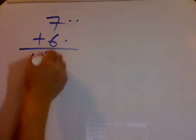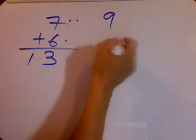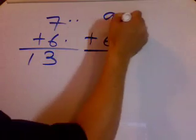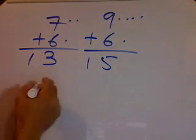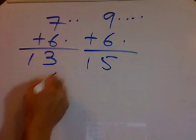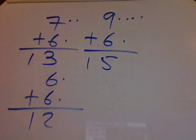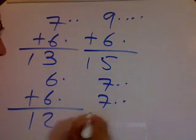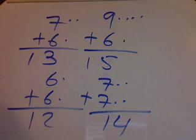If I have 9 plus 6, that's 1 and 4, giving 15. If I say 6 plus 6 — I know it's easy — that's 2, giving 12. If I say 7 plus 7, that's going to be 14.